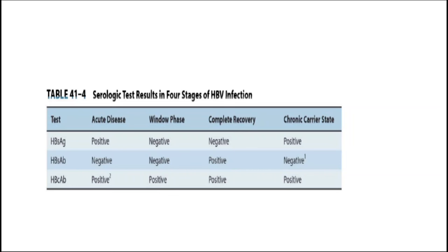Here is another slide showing the four major clinical entities associated with typical HBV serology results. In acute disease, hepatitis B surface antigen and hepatitis B core antibody become positive. In the window period, you cannot detect either hepatitis B surface antigen or hepatitis B surface antibody, while hepatitis B core antibody is positive. In the chronic carrier state, hepatitis B surface antigen and hepatitis B core antibody are positive. In complete recovery, hepatitis B surface antigen becomes negative, while hepatitis B core antibody and hepatitis B surface antibody are positive.